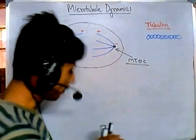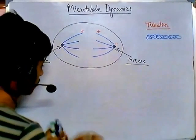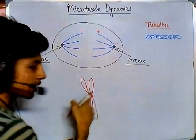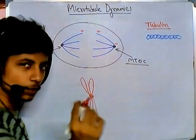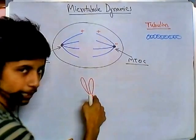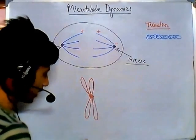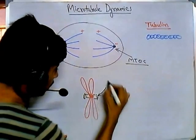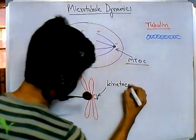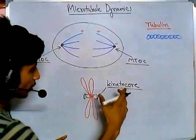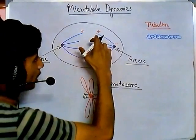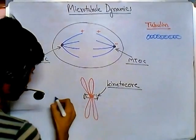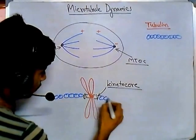The positive end interacts with the chromosome region. Sister chromatids are always present there — they are joined at the center region of the chromosome. This joint region, where the microtubule's plus end interacts, has a special kind of structure called the kinetochore. Using this kinetochore, the positive terminal of the microtubule interacts with the chromosome.